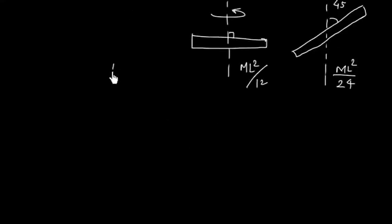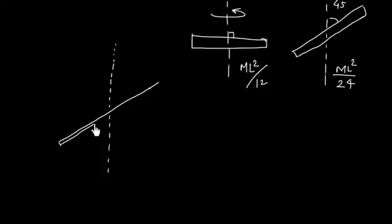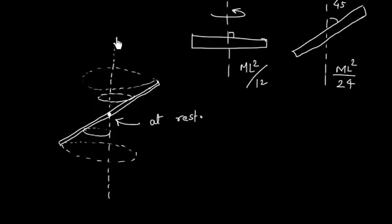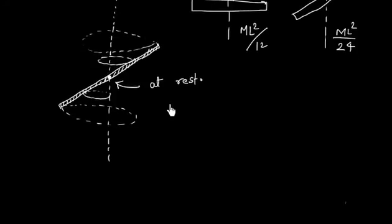Now let us consider what kind of motion the rod will have in this case. If you see, each point of the rod will form a circle as it rotates. This point is moving in this circle, and this point is moving in this circle. The point at the axis is at rest, and points along the rod make progressively smaller circles. So all points of the rod are moving in circles as the rod rotates about the vertical axis.